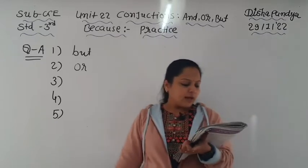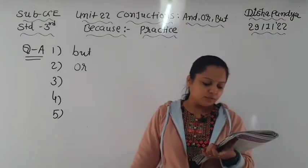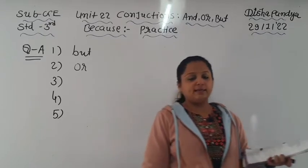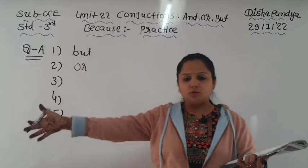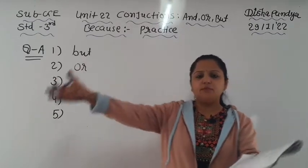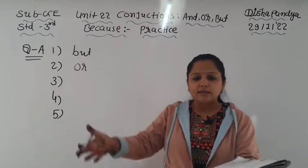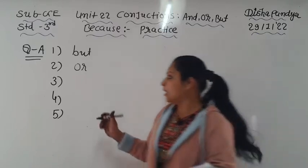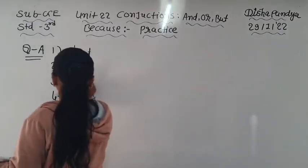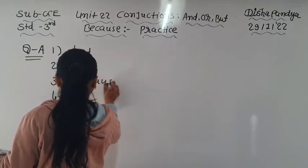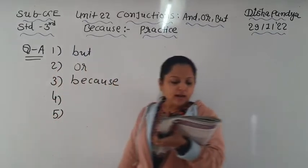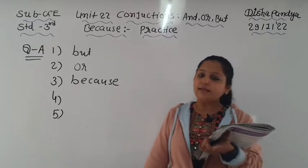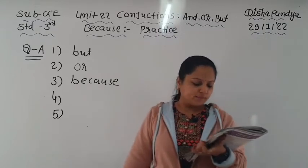Number three: 'I got late for school blank there was a traffic jam.' Here we have a reason given. The reason I got late for school is because there was a traffic jam. So the answer is: 'I got late for school because there was a traffic jam.'